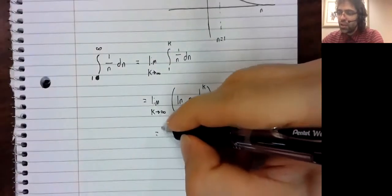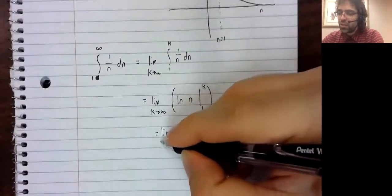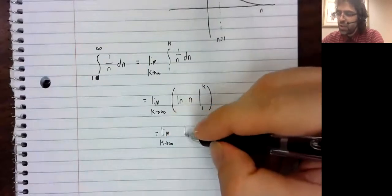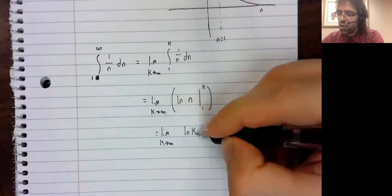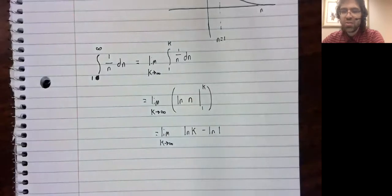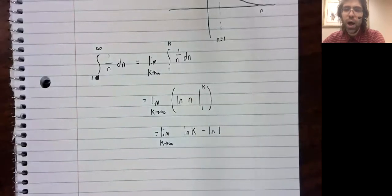And we get the limit as k goes to infinity of the natural log of k minus the natural log of one.